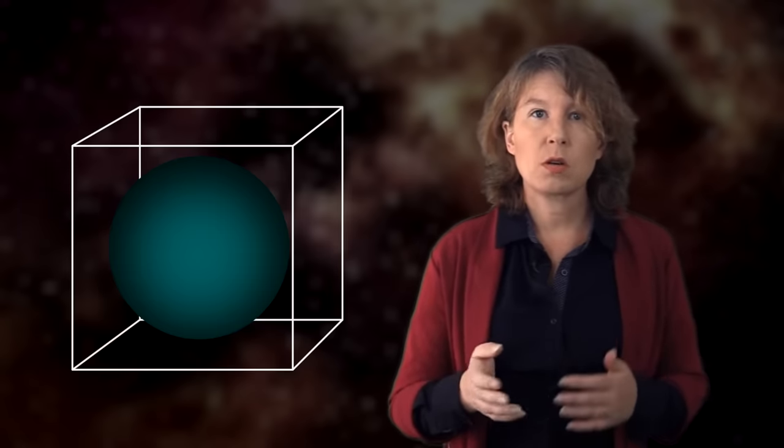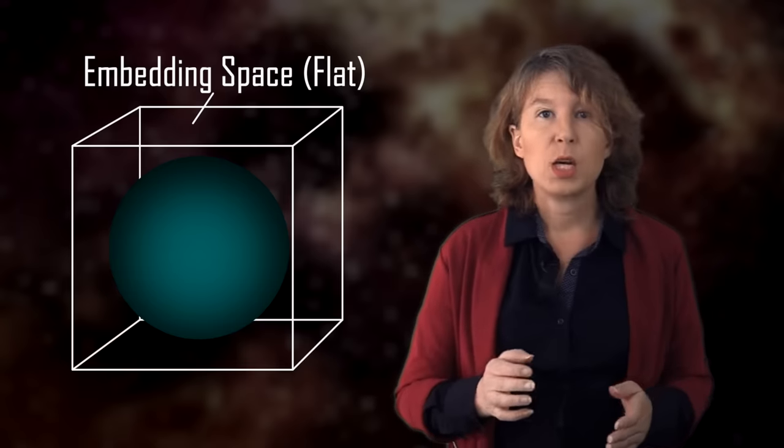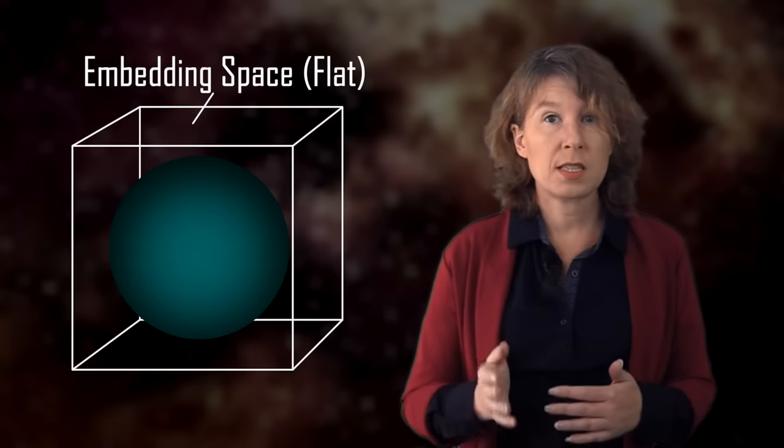To see what it means for space-time to curve, let us start with the simplest example, a two-dimensional sphere. No time, just space. That image of a sphere is familiar to you, but really what you see isn't just a sphere. You see a sphere in a three-dimensional space. That three-dimensional space is called the embedding space. The embedding space itself is flat, it doesn't have curvature. If you embed the sphere, you immediately see that it's curved. But that's not how it works in general relativity. In general relativity, we are asking how we can find out what the curvature of space-time is while living inside it. There's no outside, there's no embedding space.